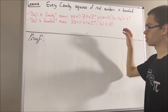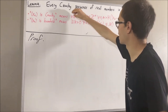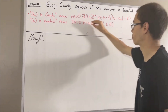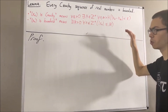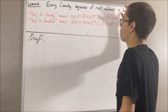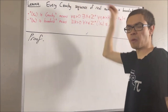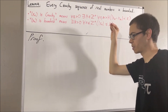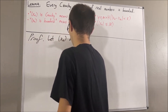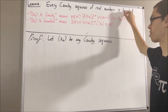So our goal is essentially to prove that every sequence of real numbers that has the Cauchy property also has the bounded property. We're trying to prove a statement about every Cauchy sequence of real numbers, so let's give ourselves an arbitrary Cauchy sequence of real numbers. We'll call it xn. The goal is to show xn is bounded.